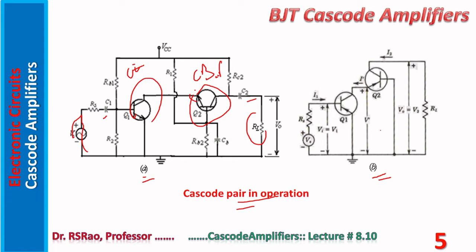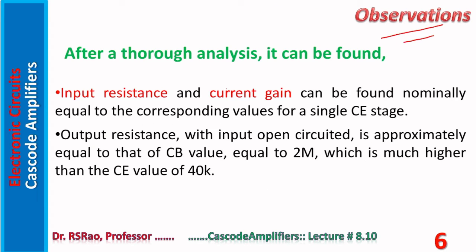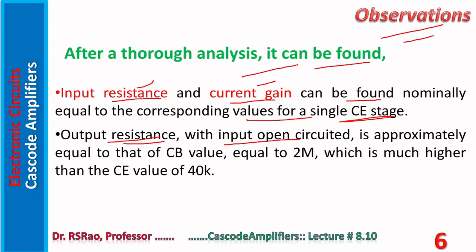After thorough analysis, input resistance and current gain can be found nominally equal to the corresponding values of a single CE stage — not much change after modification. Output resistance with the input open-circuited is approximately equal to that of the CB value, around 2 megaohms, which is much higher than the CE value of 40K. So the output impedance of the pair is more than a single CE stage.